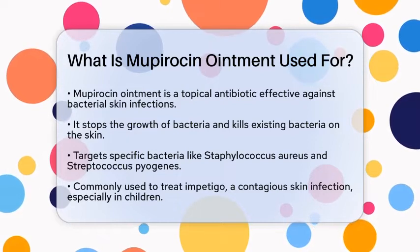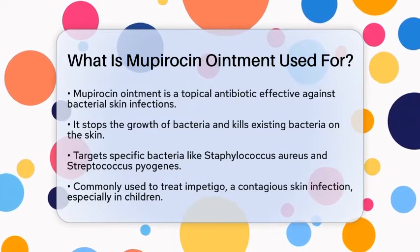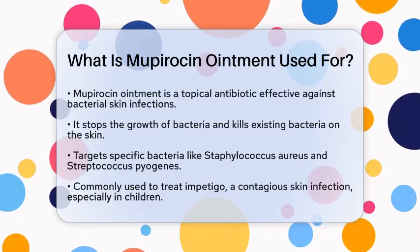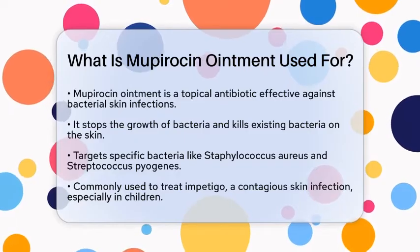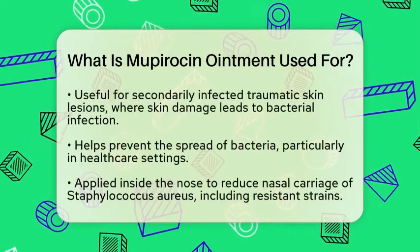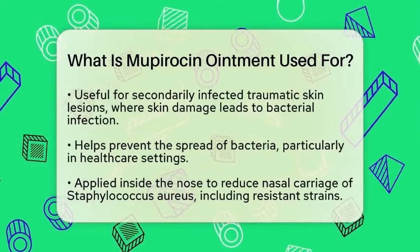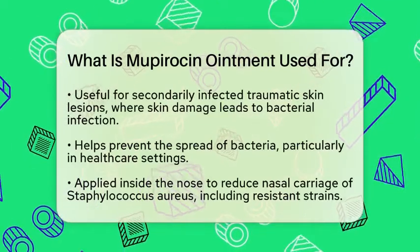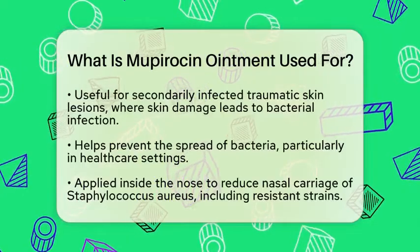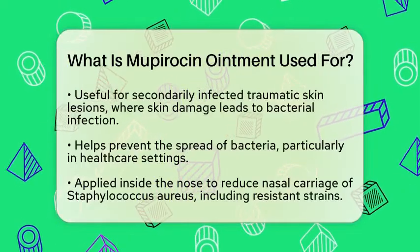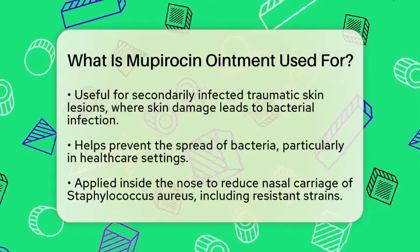One of the main uses of Mupirocin ointment is for treating impetigo. This is a highly contagious skin infection that often affects children. Mupirocin is also beneficial for secondarily infected traumatic skin lesions — areas where the skin has been damaged and then become infected by bacteria.